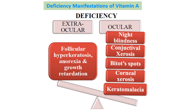Regarding deficiency manifestations: ocular manifestations are more common since vitamin A is essential for vision. The overall array of ocular symptoms is called xerophthalmia. These include: night blindness, conjunctival xerosis, Bitot's spots, corneal xerosis, and keratomalacia. Extra-ocular manifestations include follicular hyperkeratosis, anorexia, and growth retardation.